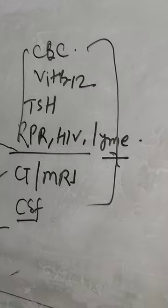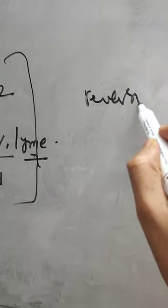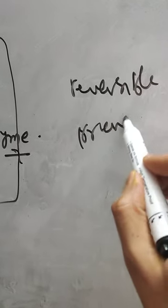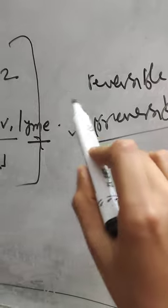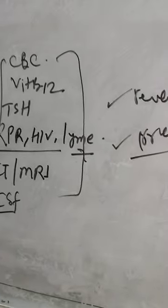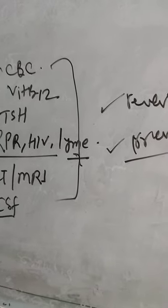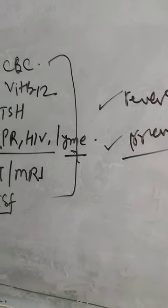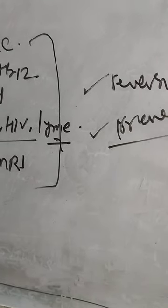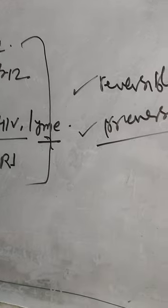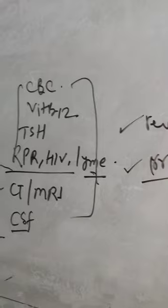With these tests we can find out whether the cause is reversible or irreversible. If it's neurodegenerative disorders, we can't reverse that. But if there is vitamin B12 deficiency or hypothyroidism, if we treat the underlying pathology we can revert the cognitive impairment. That's why it's essential to determine whether this cognitive impairment is reversible or not.